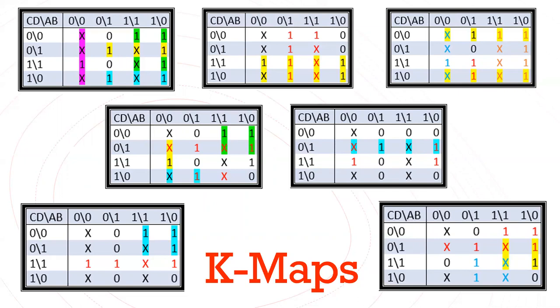Then from there, we determined the min and max terms. For SOP, we put ones in the min terms and zeros elsewhere, respectively. However, if it were POS, it would work the opposite way. Then, we make the groups containing the terms in powers of 2, like 2, 4, and 8, and try to cover as many elements as possible in one group. And then lastly, we find the product terms and sum them up for SOP forms.